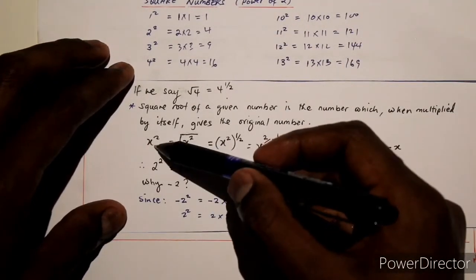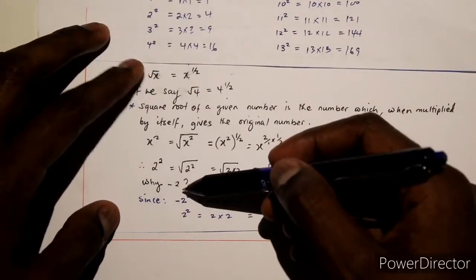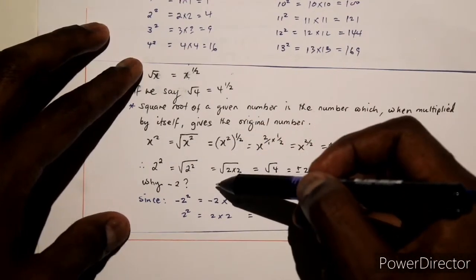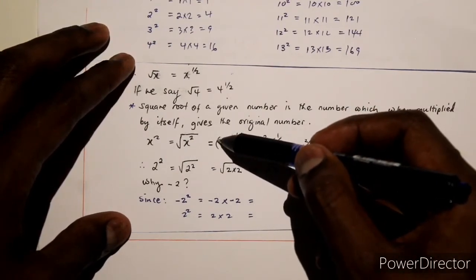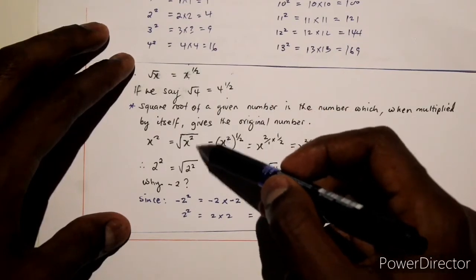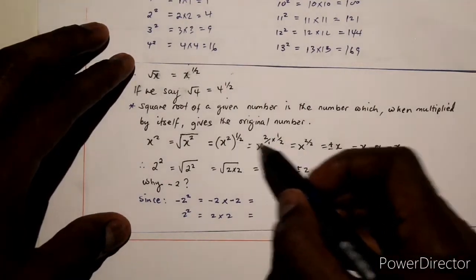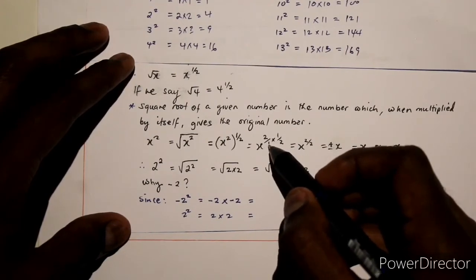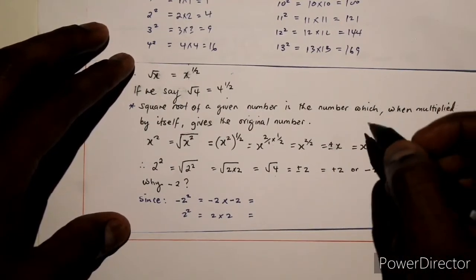For example, let's say x squared — x can be any number. If we get the square root of x squared, that's the same as (x²) to the power of one half. Since there are two powers, we multiply them: 2 times one half equals 1. So we end up with x to the power of 1, which is simply x.